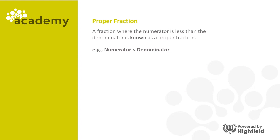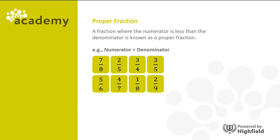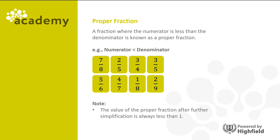A fraction where the numerator is less than the denominator is known as a proper fraction. It's worth noting that the value of a proper fraction after further simplification is always less than one. Even in that first example, seven eighths, it's very close to being one but it's less than one.